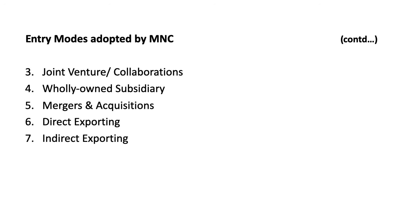Indirect exporting involves exporting through domestically based export intermediaries. The exporter has no control over its product in the foreign market. This kind of indirect exporting may be mainly used for agricultural products where the brand name would not make much difference. The export in these cases is carried out through export trading companies, export management companies, or export merchants.